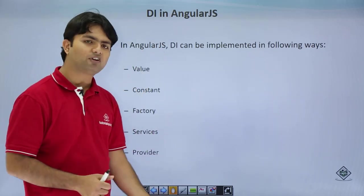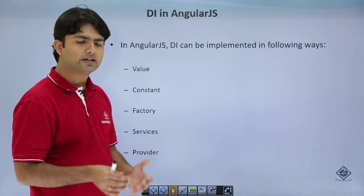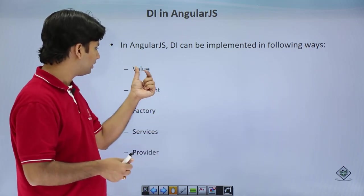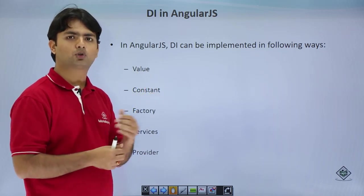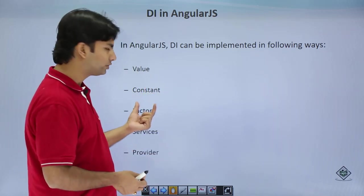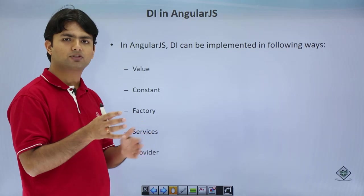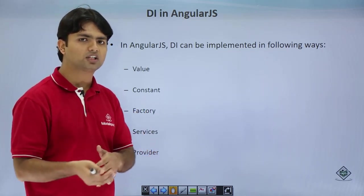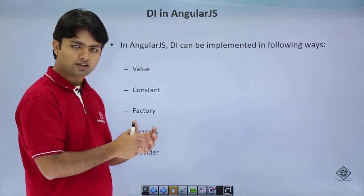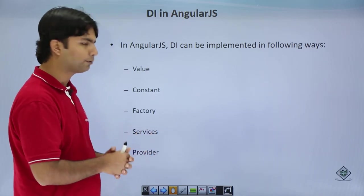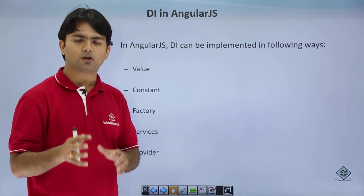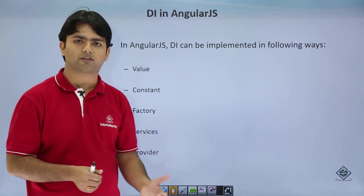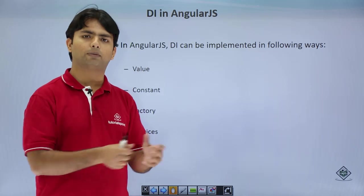There are five different ways to implement dependency injection in AngularJS: value — when you want to create a variable; constant — when you want a member whose dependency value doesn't change; factory and service, which we have already seen but will revisit here; and provider — one of the most versatile ways to create a factory. These are the five methods — let's quickly see the implementation of each.